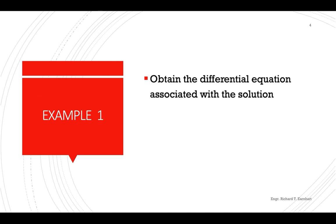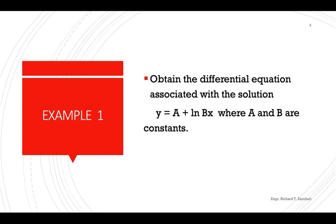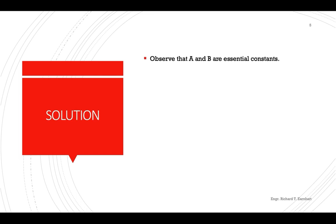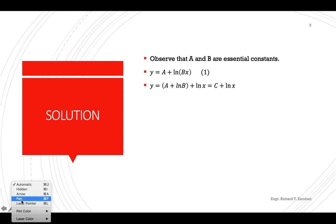Let's look at example number one: obtain the differential equation associated with the solution y equals a plus ln(bx), where a and b are constants. Observe that a and b are essential constants, because if we try to simplify the given equation, we can combine a plus ln(b) applying the properties of logarithm.